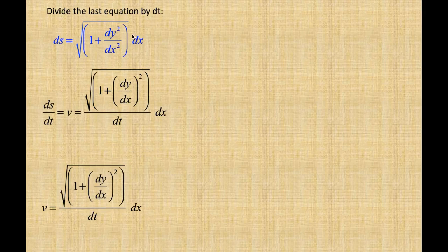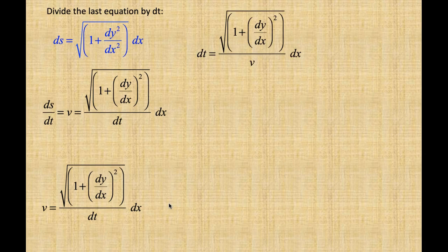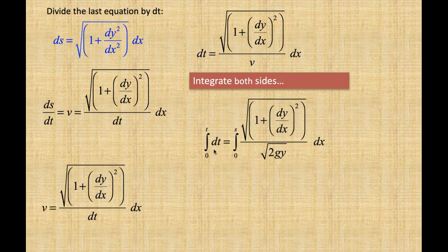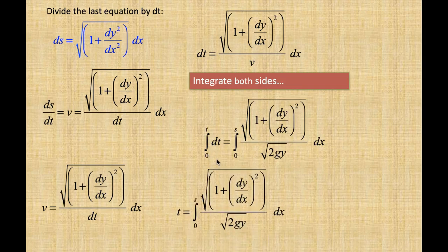Divide the last equation by dt. Since ds over dt is equal to the velocity, we have velocity equals the square root of the quantity one plus dy over dx squared, divided by dt times dx. We integrate both sides — integrating dt from 0 to t and the other quantity on the right from 0 to s — and we end up with this equation for time.